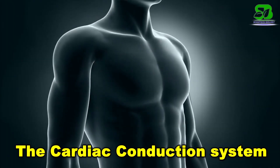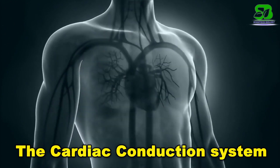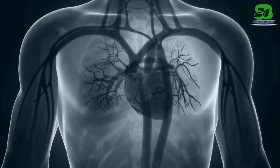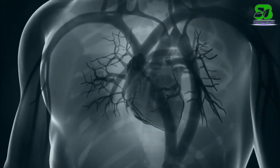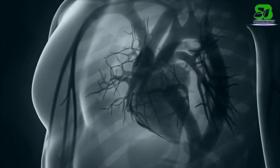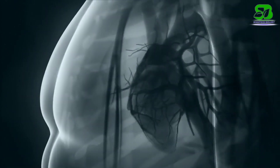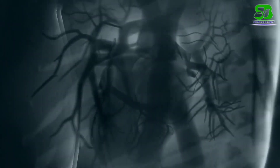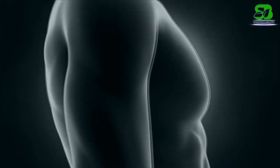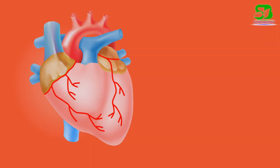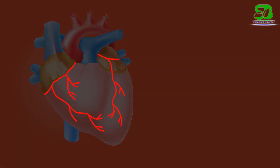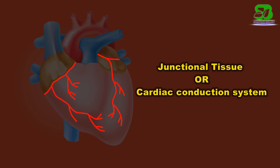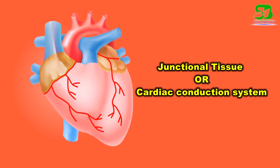Our heart beats throughout life spontaneously and rhythmically. For this, the heart generates repeated impulses at regular intervals without any external stimulus, which spread over the entire heart. For the origin and propagation of cardiac impulse, some cardiac muscle fibers have become specially modified so that they can generate and conduct impulses. They are collectively known as the junctional tissue of the heart, or cardiac conduction system.